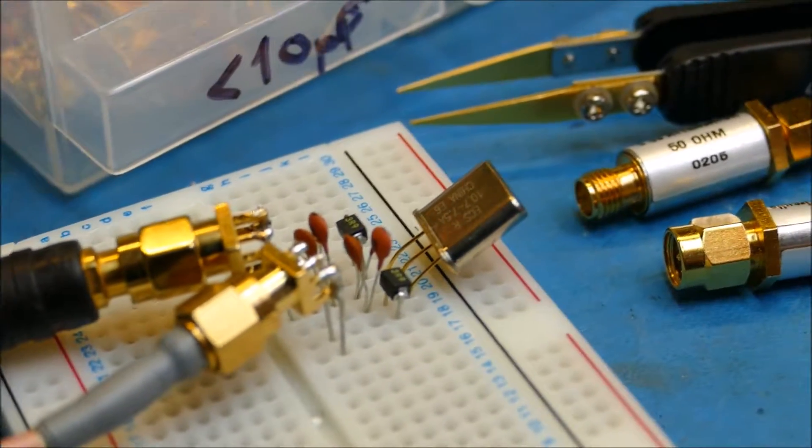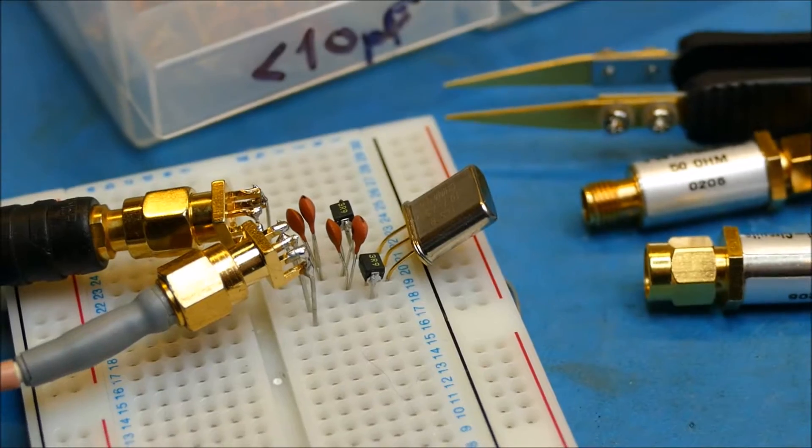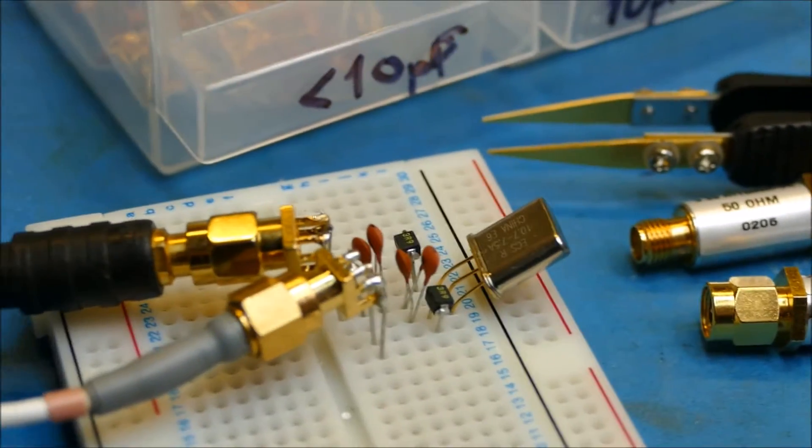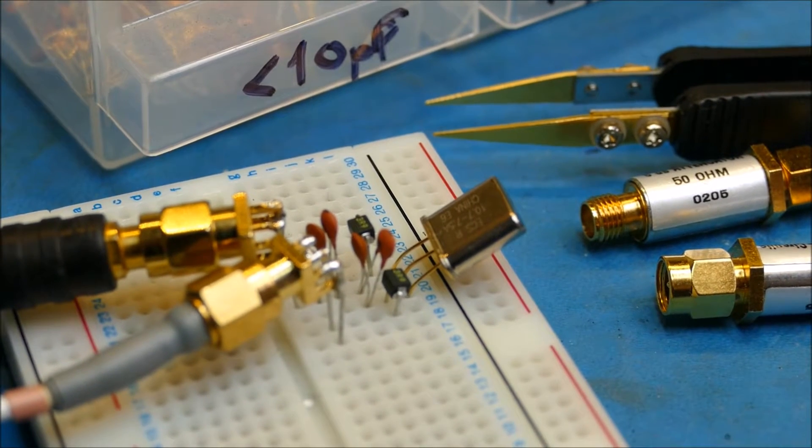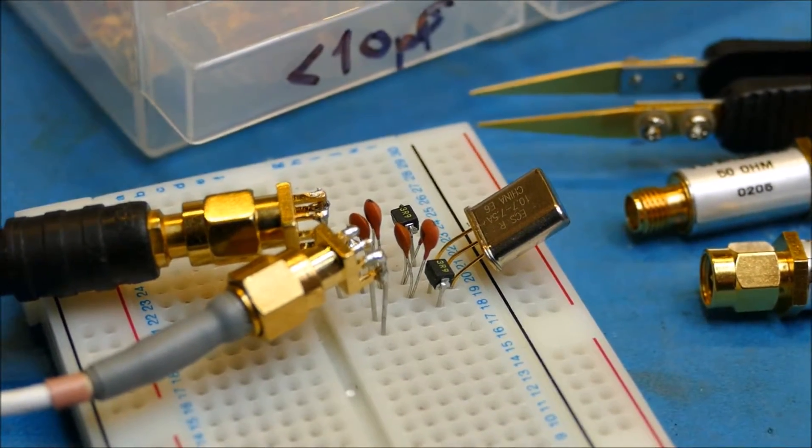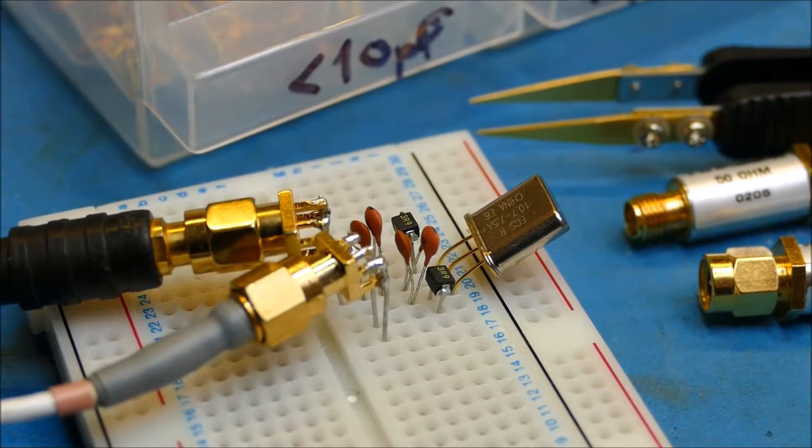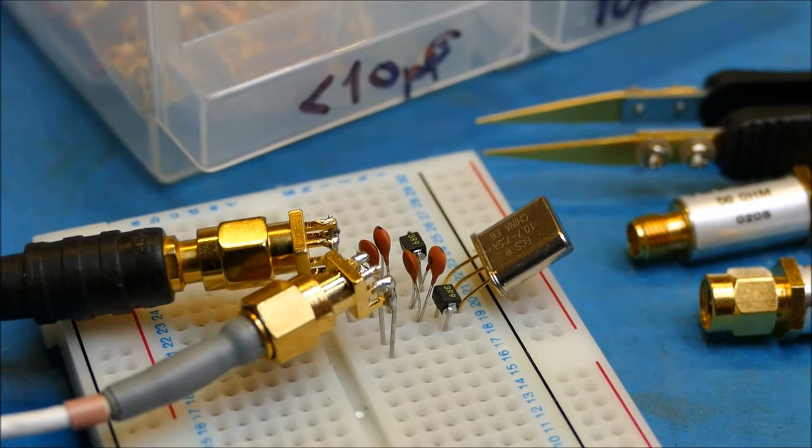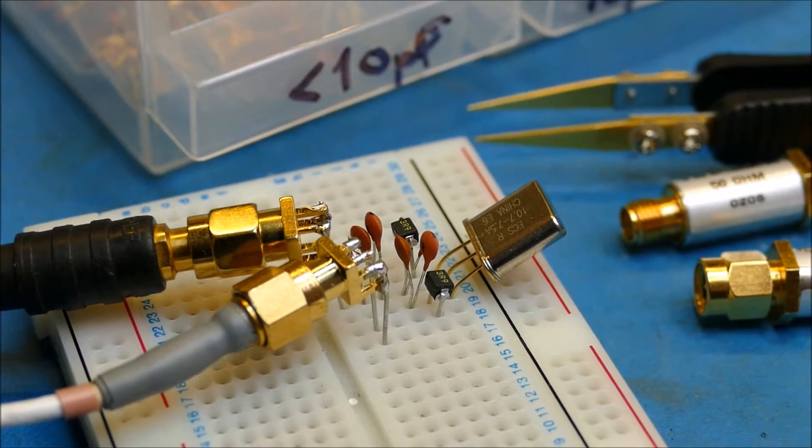Greetings again folks. I've been asked to look at this tracking generator problem with the Rigol DSA815 a little bit closer. One thing there was some concern about was whether or not the matching on the filter I was using was actually possibly shifting the center frequency of the crystal filter.